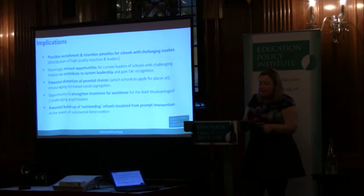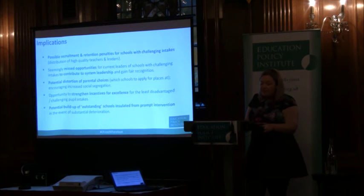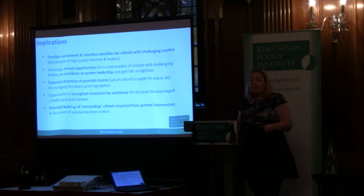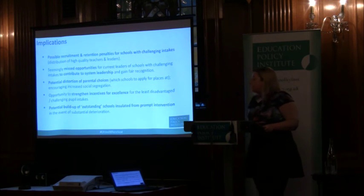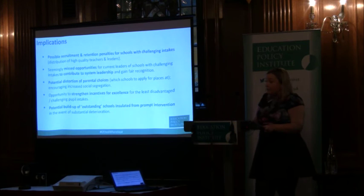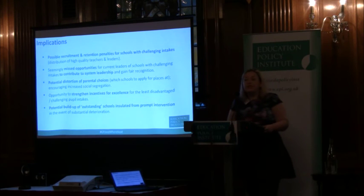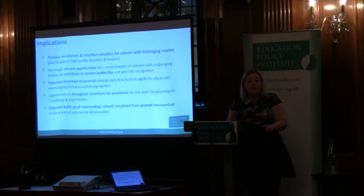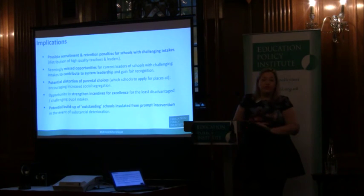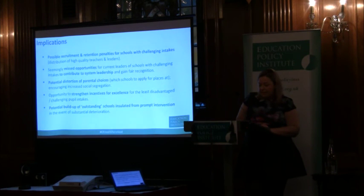Our third implication is the possibility of distorting parental choices about which schools to apply to. This could encourage increased social segregation, because the pattern of results leads people to believe that high FSM schools in some way equate to poor quality education. The value-added progress analysis suggests this is certainly not always the case. This could be particularly misleading to disadvantaged parents looking at schools with very few disadvantaged children, since they'd essentially be looking at results for other people's children and not for their own.